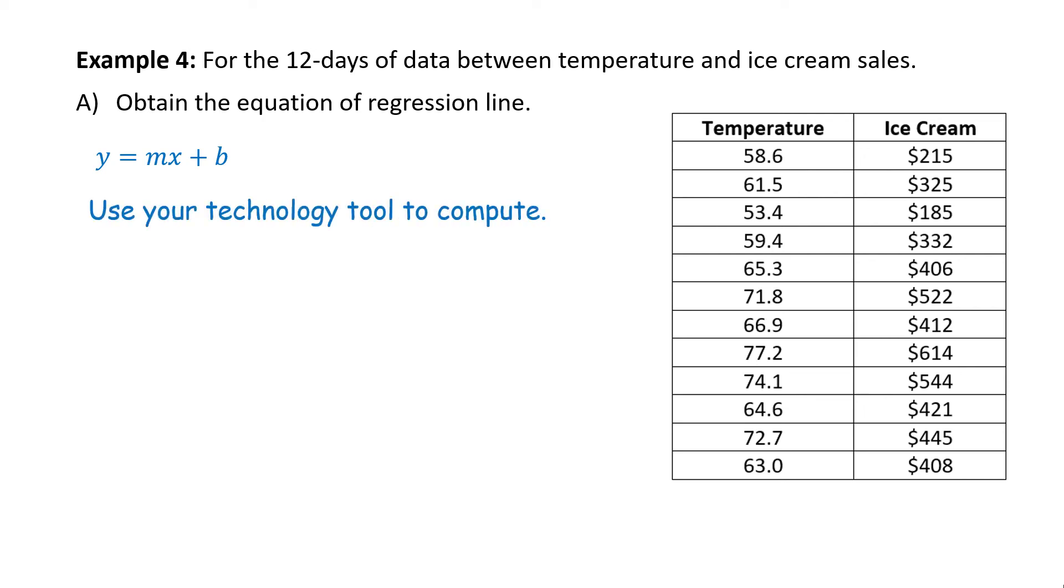We will use the technology tool to compute, that is the TI-84, same set of keystrokes as for computing the correlation coefficient. In fact, the screen already has the answer from the correlation coefficient. We got that a equals 16.838 and b equals negative 703.997. The TI-84 gives the slope value as a instead of m, so when we write the equation of the line we will have y equals 16.84x minus 704.